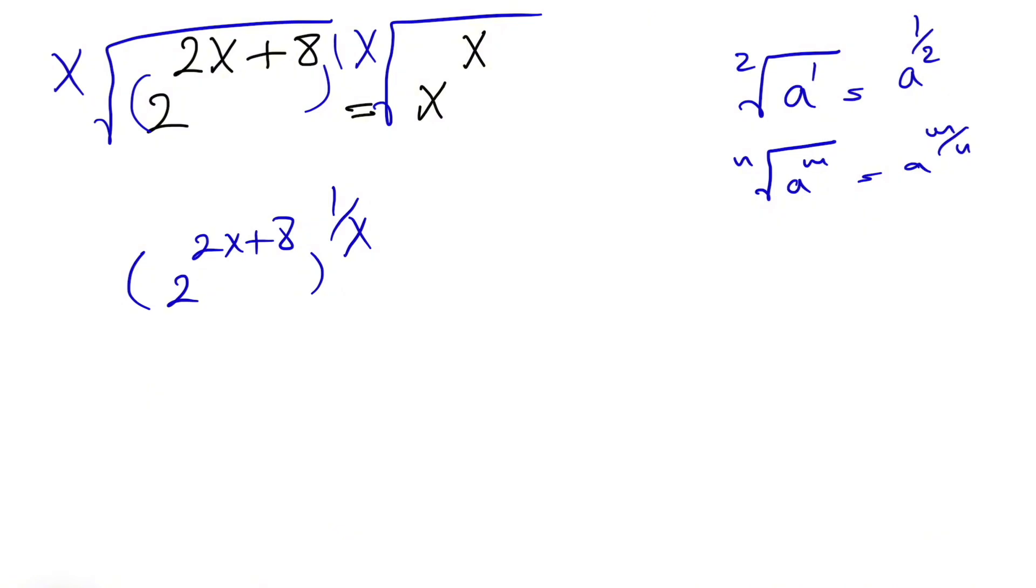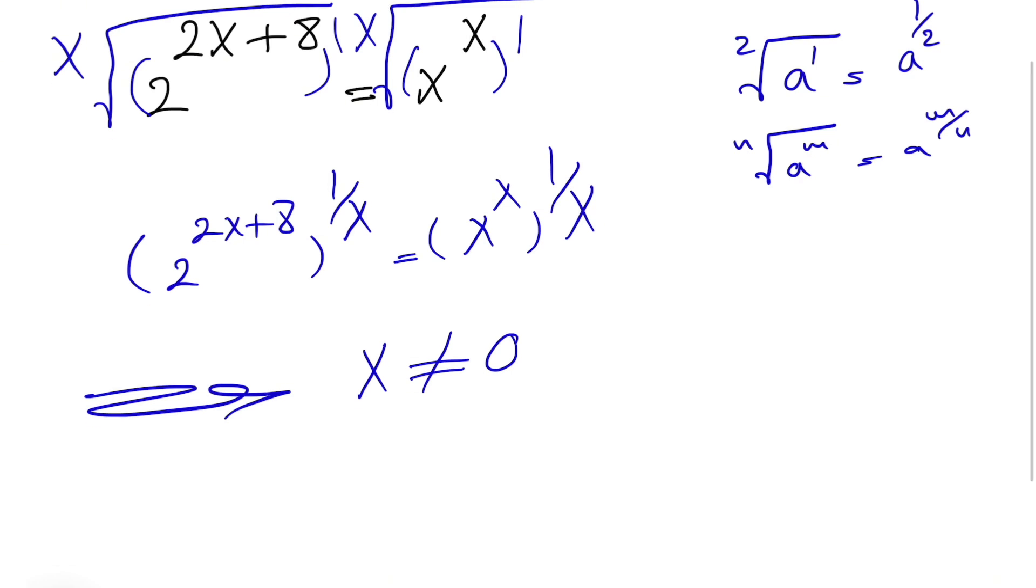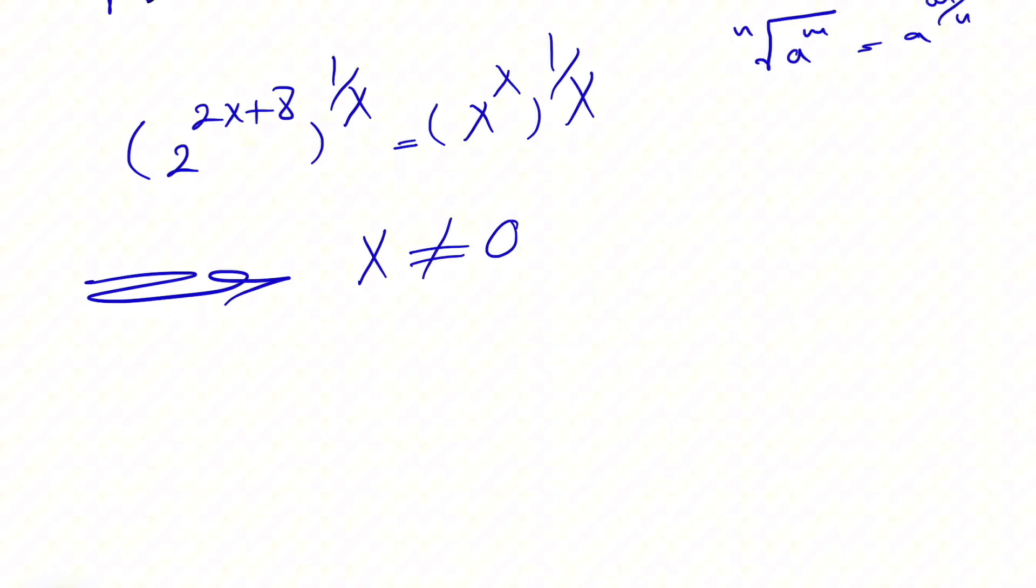Here we know the power of this is 1, so it will be 1 over x. On the other side we'll have x to the x to the power of 1 over x. We have one condition though, and the condition is that x cannot be 0 because that's going to make our denominator 0, which won't be acceptable. So let's see what we get now.